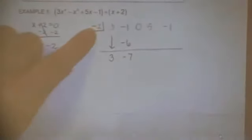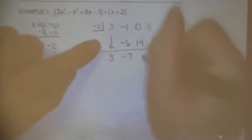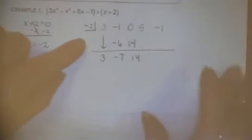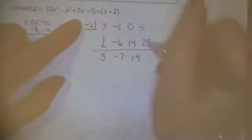Then you do the same thing over again. Multiply, negative 2 times negative 7 would be 14, add straight down. Then you multiply, negative 2 times 14 is 28, add straight down.